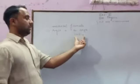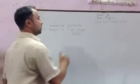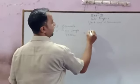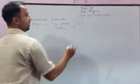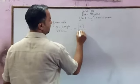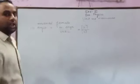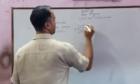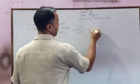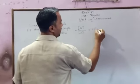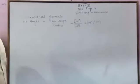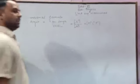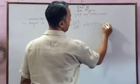The angle is defined as arc length upon radius. Arc length is measured in meters (length) and radius is also measured in meters. So the dimensional formula is M to the power 0, L to the power 0, T to the power 0. Hence we can say that the dimensional formula of angle is dimensionless.